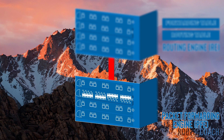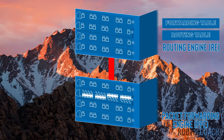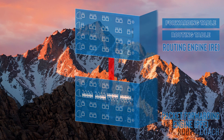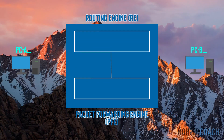This also enables the PFE to continue forwarding if something were to happen to the routing engine. Alongside forwarding traffic, the PFE is responsible for policers that provide rate limiting, stateless firewall filters, and class of service. I'm going to repeat that because it sounds like an exam question: alongside forwarding traffic, the PFE is also responsible for policers that provide rate limiting, stateless firewall filters, and class of service.